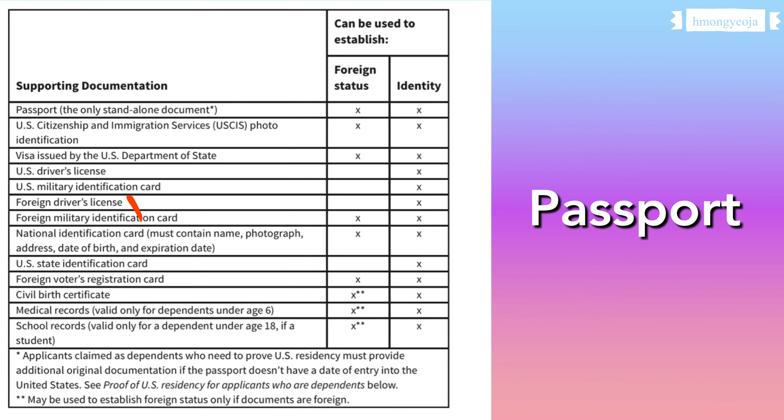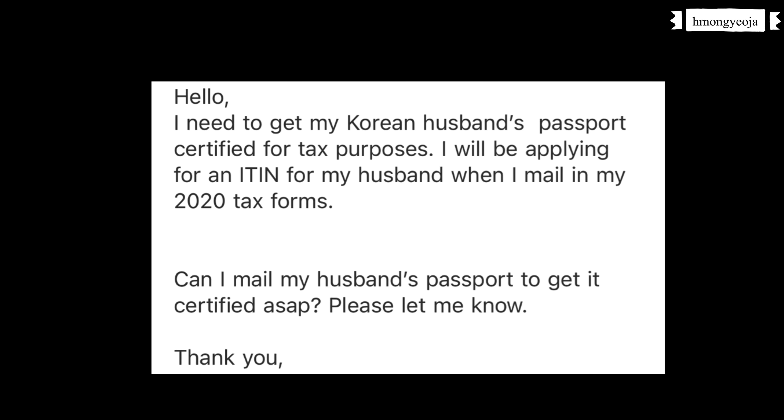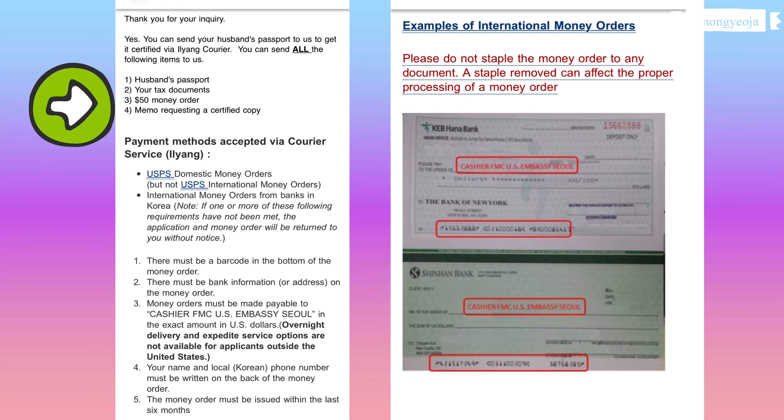You need to make an appointment at the U.S. Embassy, but these days because of the situation we cannot go to the embassy. If you check the embassy website, all of the appointments for notarial services have no availability. Since there were no appointments available, I had to email the embassy. I emailed them saying I needed my Korean husband's passport certified for tax purposes — I would be applying for an ITIN — and asked if I could mail my passport to the embassy to get it certified.